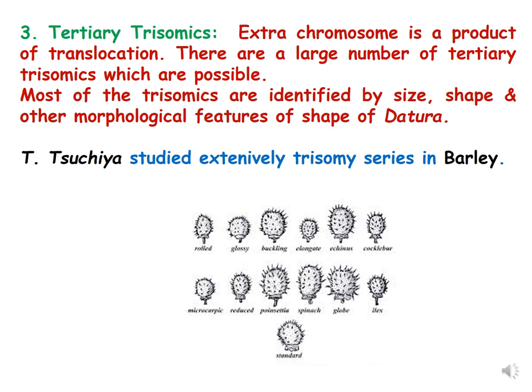Tertiary trisomics are those where the extra chromosome is a product of translocation, and translocation occurs between non-homologous chromosomes. Since there are many possibilities because of translocation, there are a large number of tertiary trisomics possible in Datura. Most trisomics are identified by size, shape, and other morphological features. T. Shuiya studied the trisomy series in Datura extensively, and the different trisomics of Datura are shown with different morphologies.